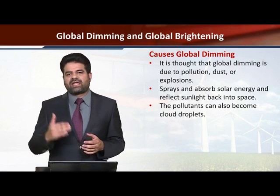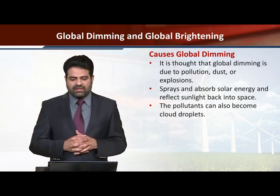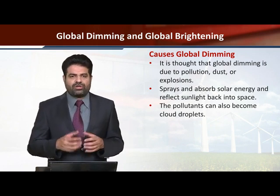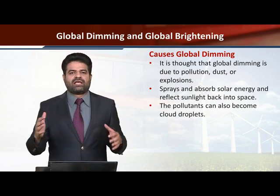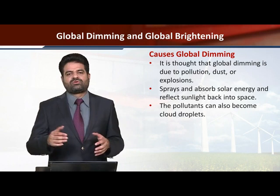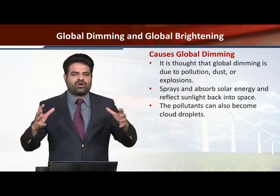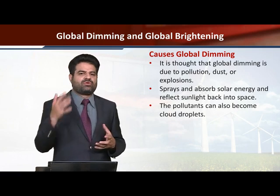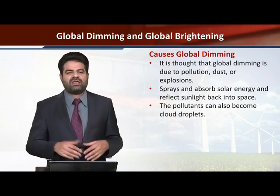The pollutants can also become cloud droplets — when clouds form, pollutants come down to earth like droplets with rain. Rain actually cleans the human atmosphere, purifying it so that dimming is reduced and sunlight can reach the earth in a better way.